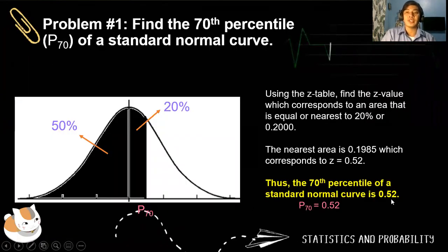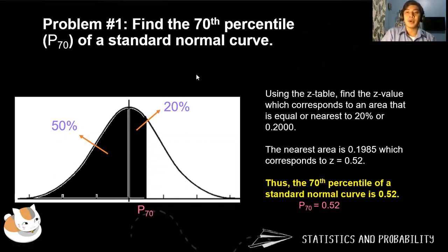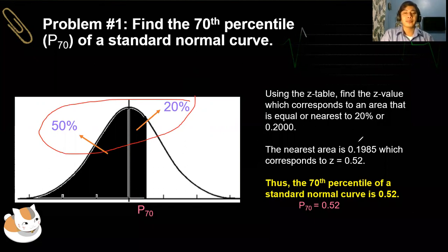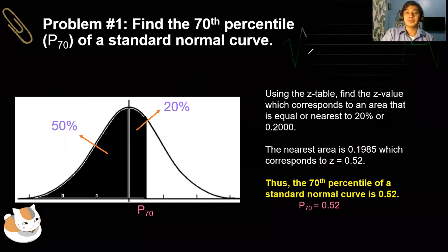In your modified assessment, you will be asked about the required area — that is 0.5 plus 0.2. For the second column of the modified assessment, you will be asked for the nearest area using the Z-table. On the third column of the modified assessment, your answer should be reflected as Z equals 0.52.